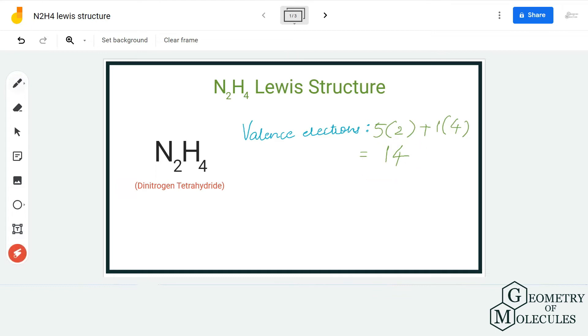Once you know the number of valence electrons, it becomes quite easy to depict the Lewis structure for any given molecule. Here we are going to place both nitrogen atoms next to each other, and the hydrogen atoms will be placed around them. Each nitrogen atom will be forming a bond with two hydrogen atoms.